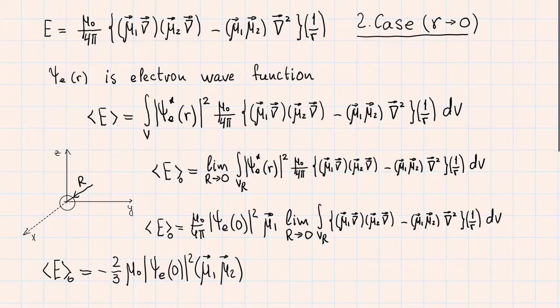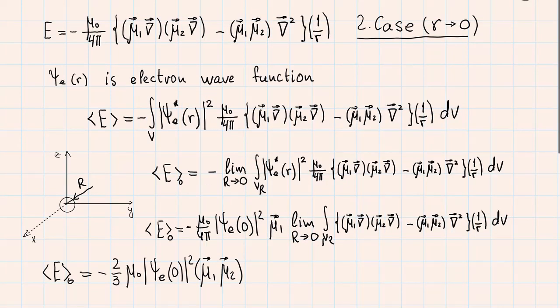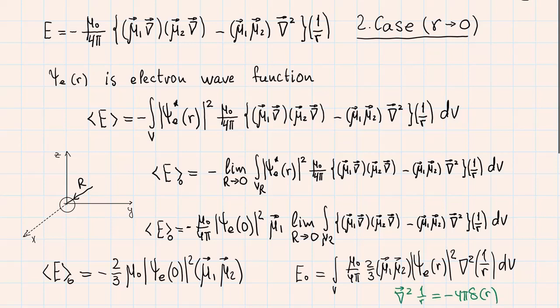Hence, we have obtained an energy, which is proportional to the probability density at zero point and to the product of both magnetic moments mu1 and mu2. Remarkably, we can obtain the same results if we calculate the integral over the whole volume from such function, which I have written under the integral. It can be easily proven if we remind ourselves the formula for the Laplacian action on the inverse distance.